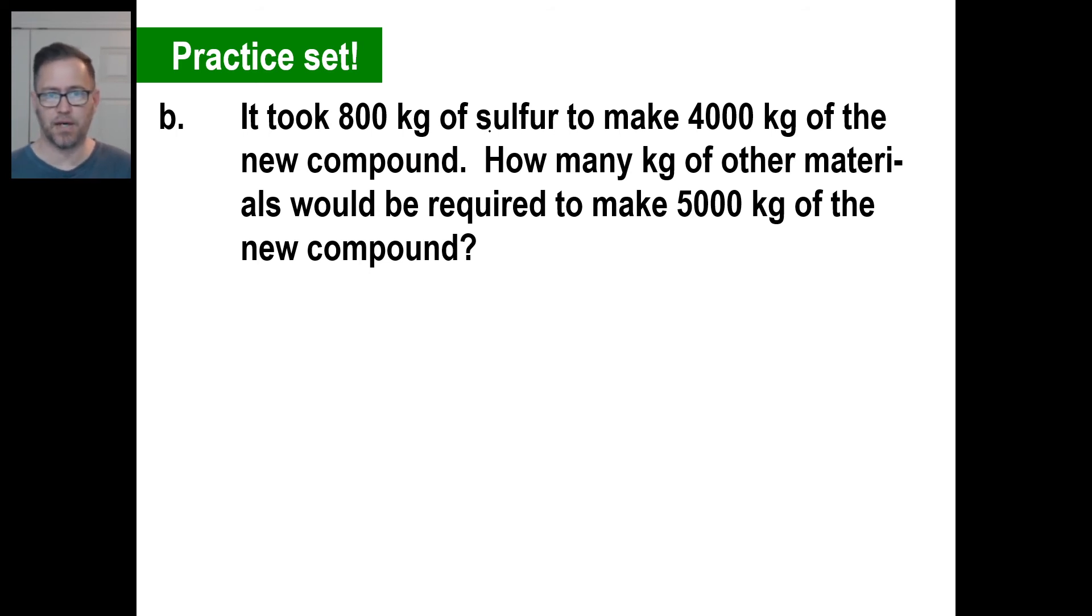All right. It took 800 to make 4,000. Let's just stick that up here. 800 to make 4,000. And that's the sulfur part. How many kilograms of other materials? Okay. So let's forget this and let's not talk about sulfur anymore. We know we have a ratio, 4,000. If we have 800 kilograms of sulfur, it's going to stink for one thing. Okay. Then we have 3,200 of other materials because 4,000 minus 800 is that. All right. So let's make ourselves a ratio. How many kilograms of other material? We don't know. Call it X. We'll be required to make 5,000. There you go. Okay.